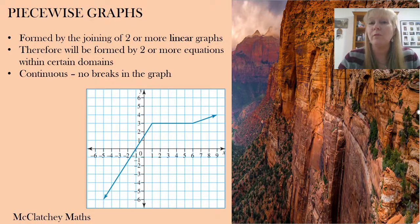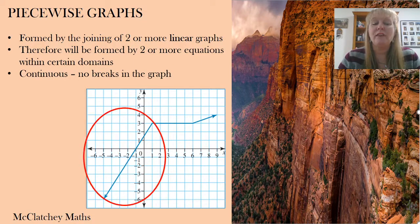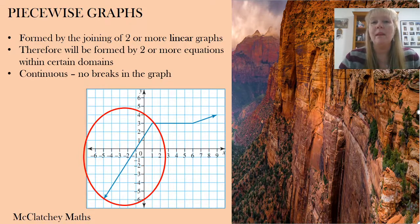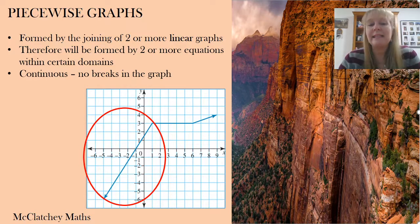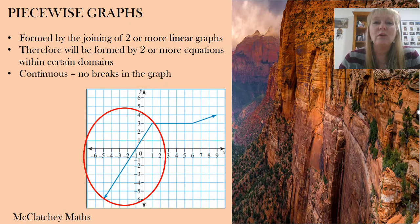So let's look at an example of a piecewise graph. In this particular example, we've got three different equations joining to form one continuous long line. Now the first part is shown over here. Now that's within the domain that all values of x are less than 1. So you can see that goes all the way to negative infinity for x values.